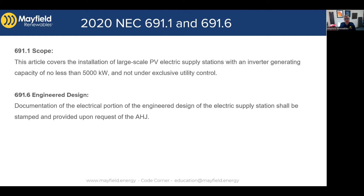One thing to point out is there's an informational note in the scope. The informational note is not part of the code — it's just information. But it clearly calls out that these systems are operated for the sole purpose of providing electric supply to a system operated by a regulated utility. So these are systems that are interactive with the utility and they're power plants, working with the utility to supply that power. There's a clear differentiation as we start to see microgrids and other systems like that.